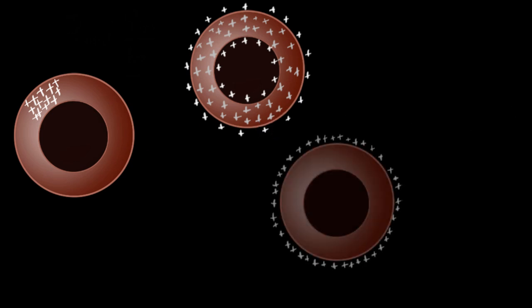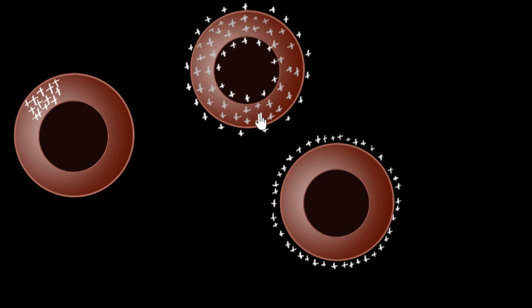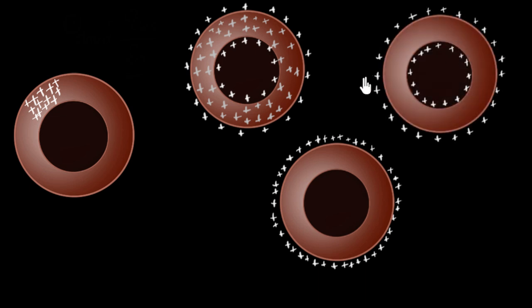But another option could be, maybe all the charges for some reason, they only redistribute themselves on the outer surface of the conductor. That's another option. Or maybe the charges distribute themselves on the outer surface and the inner surface of the conductor. And the goal is to figure out which one of this is going to be, and why. The why part is also super important.